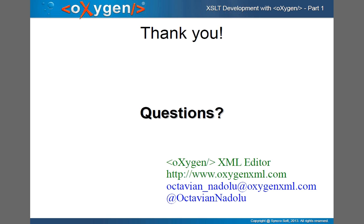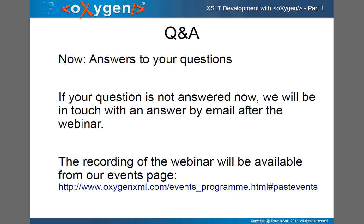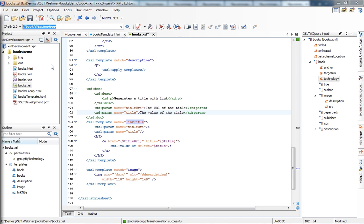Thank you for your attention. If you have any questions that you didn't ask yet, you can add them now. George will read some of the questions you already submitted. We received hundreds of questions so I'm not sure how many we will be able to go through in the four or five minutes we have left. One question was whether you can apply transformations on multiple files or on a folder. You can apply the transformation action in batch on a set of files or a folder from the project view — select the files and use the contextual menu, Transform, Apply Transformation Scenarios.